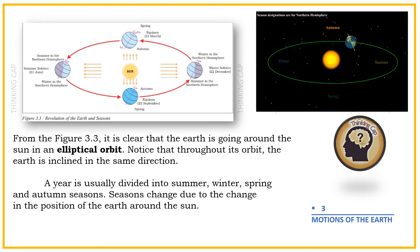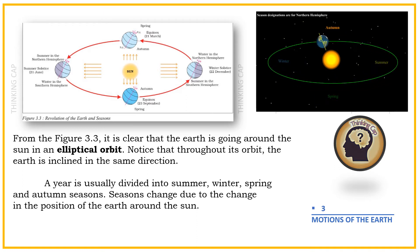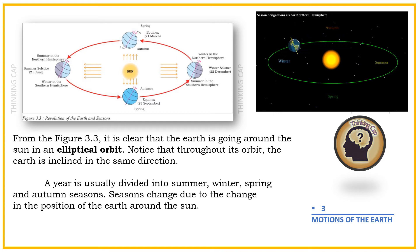From figure 3.3, it is clear that the Earth is going around the Sun in an elliptical orbit. Notice that throughout its orbit, the Earth is inclined in the same direction. A year is usually divided into summer, winter, spring, and autumn seasons. Seasons change due to the change in the position of the Earth around the Sun.